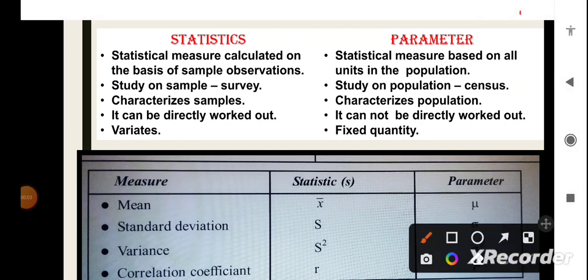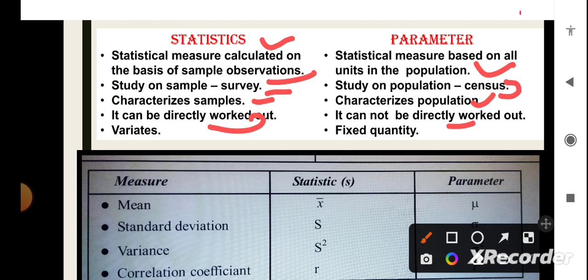Now, let's see the difference between statistics and parameter. The statistical measures which are calculated on the basis of sample observations are known as statistics. Whereas, the parameters are the statistical measures which are based on all the units in the population. The study of sample is done by survey, whereas the study of population is done by the census. The statistics characterize samples, whereas the parameter characterizes population. As we know that the sample is the unbiased estimate of the population. So, it can be directly worked out, whereas the parameters cannot be directly worked out. Statistics keeps on changing, i.e. it variates as the sample variates, whereas the parameters of population have fixed quantity.